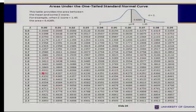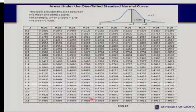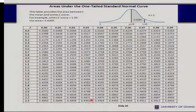Reading from the table at z = 2.23, we get 0.4871 for the area from 0 to 2.23. Subtracting 0.4871 from 0.5 gives 0.0129. So nothing changes from the approach we illustrated earlier.